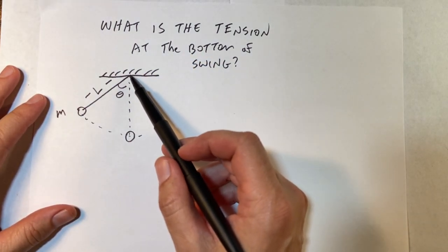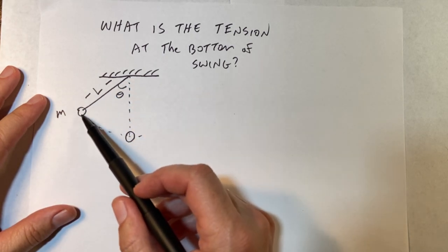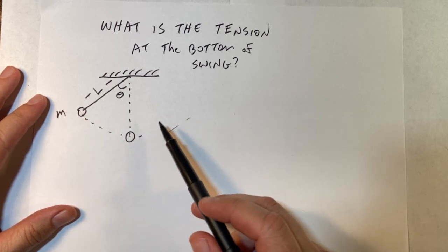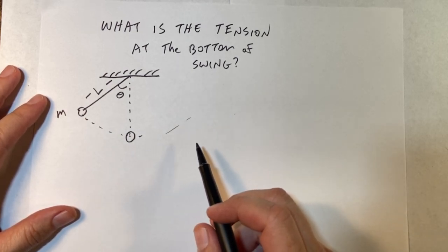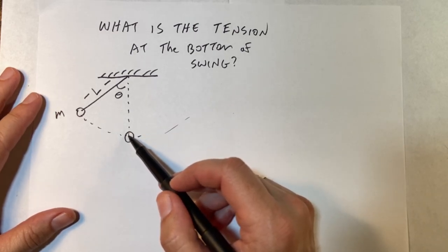So here is a swing. It has a string of length L and it starts at some angle theta and goes down like this and swings back up and back and forth. You know, a swing. The question is, what's the tension in the string at the bottom?